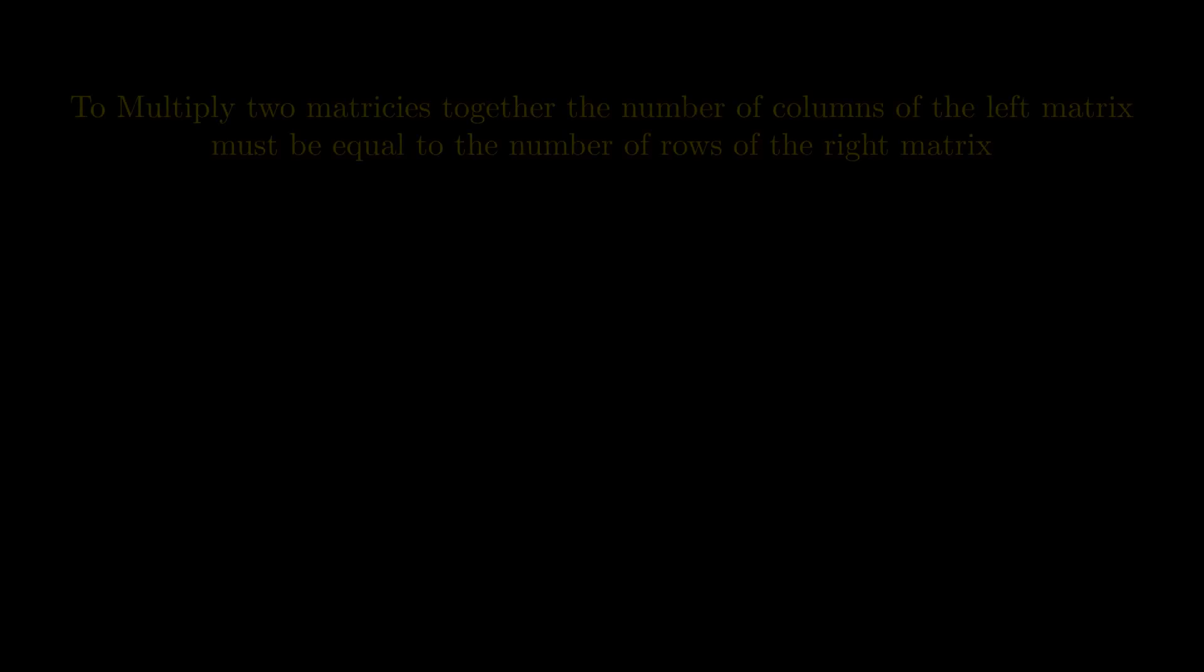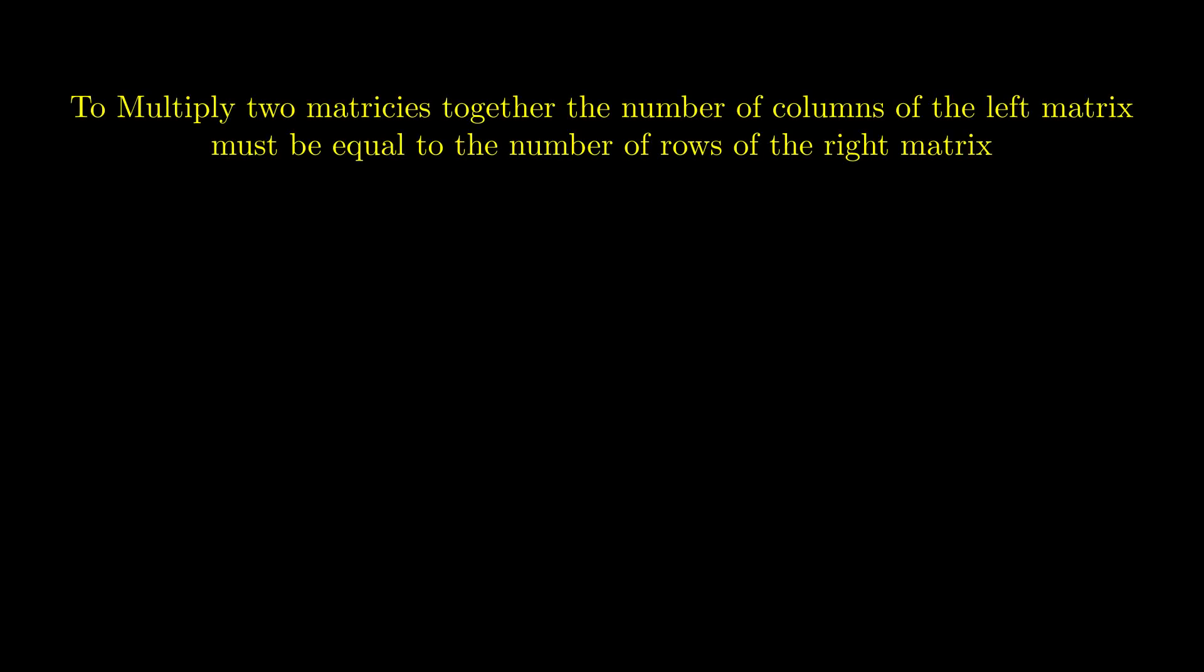It's important to note that we can only multiply two matrices together if the number of columns of the first matrix is the same as the number of rows in the second matrix. For example, we can't multiply these two matrices here, since the first one has two columns but the second one has three rows.